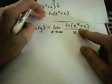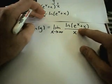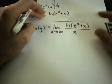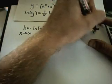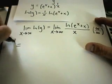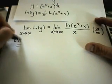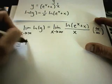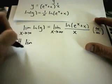Notice now the denominator is going to infinity, the inside is going to infinity, and ln of infinity is infinity. So we're getting the indeterminate form infinity over infinity, so we're going to use L'Hopital's rule.